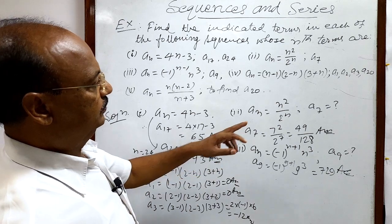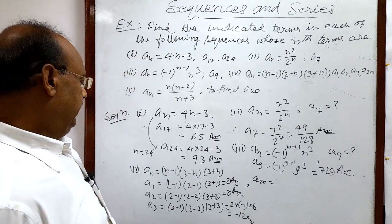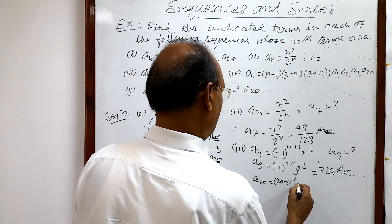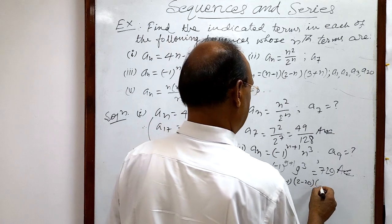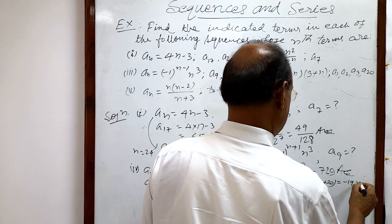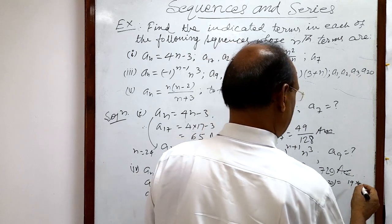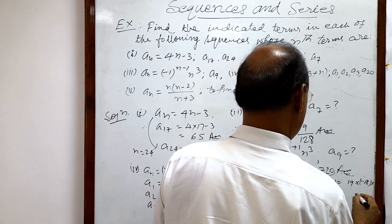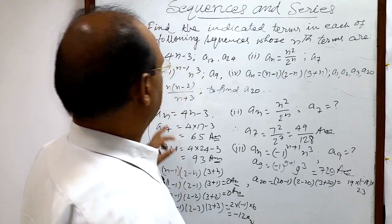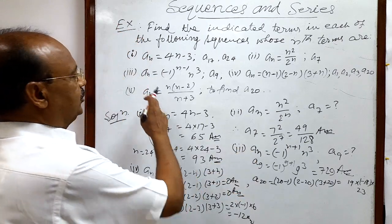And next term is a20. How to get a20? So in place of n we will put 20 here. So this is 20 minus 1, 2 minus 20, and 3 plus 20. And this is equal to - sorry, this is plus 19 into minus 18 into 23. So after multiplying these numbers we will get the answer. And a20 is this much. So that is all about solutions of question number 4.